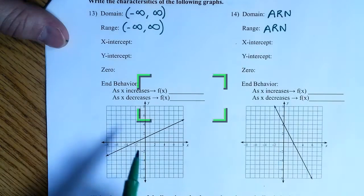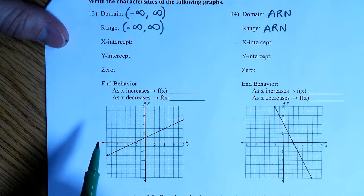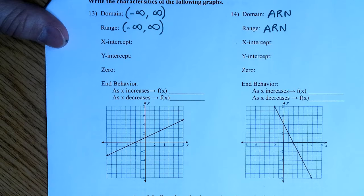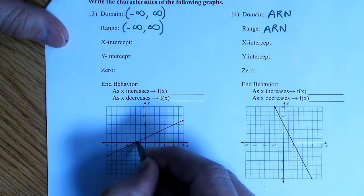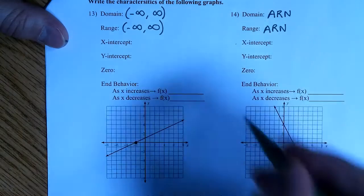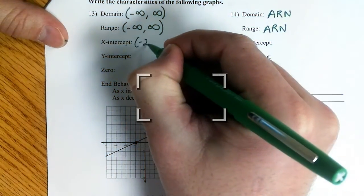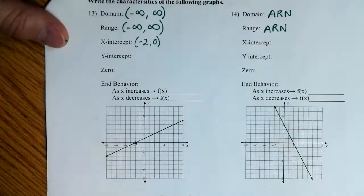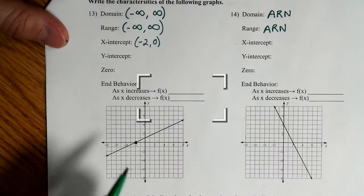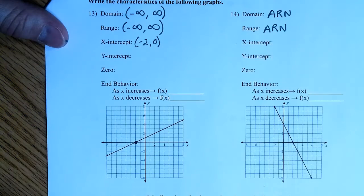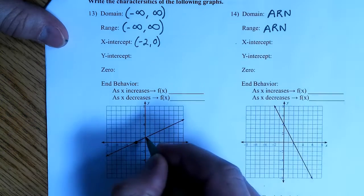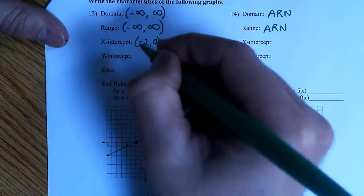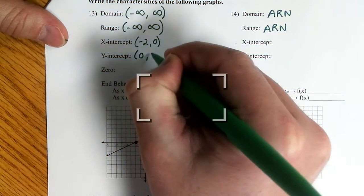Okay. For 13 here, what is my x-intercept here? Where does it cross the x-axis? Negative 2. That negative 2, yeah right there. So the x-intercept here is negative 2, 0. What about the y-intercept? Where does it cross the y-axis? Positive 1. Good. So we write that as 0, 1.